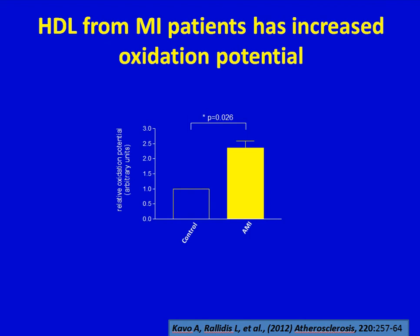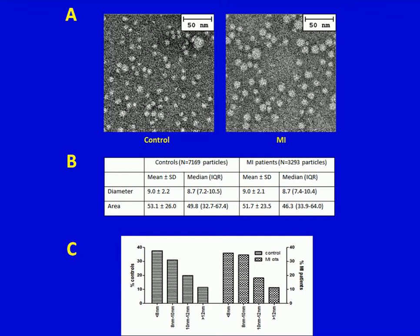Therefore, we next moved to determine the oxidation potential of HDL, and indeed, patients who had a reduced ApoA1 to ApoC3 ratio had a significantly increased oxidation potential compared to the control group. Since it has been reported in the literature that HDL particle size may be a marker for premature atherosclerosis, we also performed an electron microscopy analysis of HDL particles isolated from the control and patient groups. Our analysis did not show any statistical difference in the mean diameter or area of HDL between the two groups, though we did find a difference in the distribution of particles among different diameter ranges, suggesting the presence of different subpopulations.